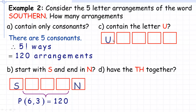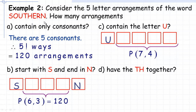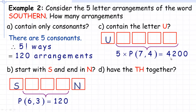Part C asks how many five-letter arrangements contain the letter U. The U does not have to be just at the beginning. There are five positions in the arrangement. If the U is at the beginning, the other four letters are selected from the remaining seven letters in Southern. So we could arrange these in seven permute four ways. We then multiply by five because the U can be in any of the five positions. Each position gives seven permute four arrangements, so we multiply by five, which works out to 4,200. There are 4,200 ways of selecting five letters that must include the letter U.